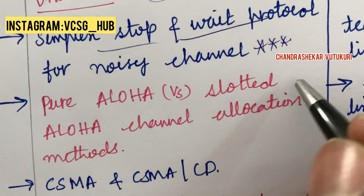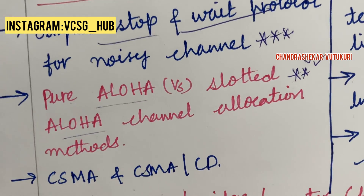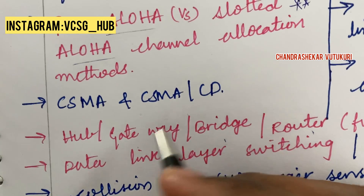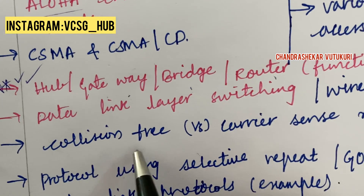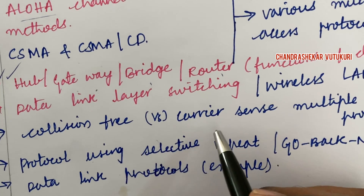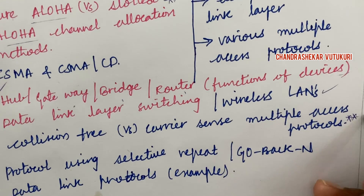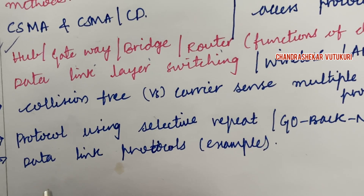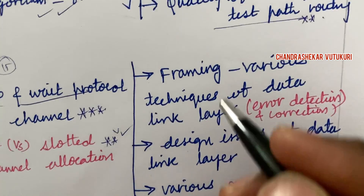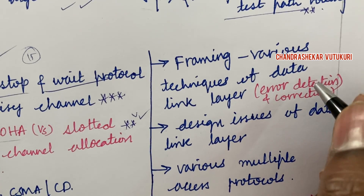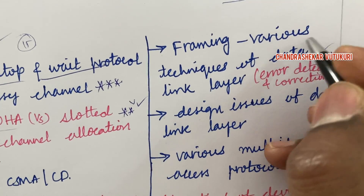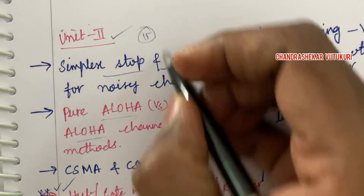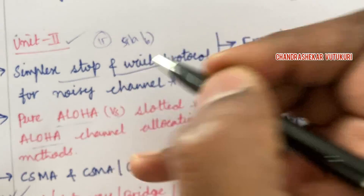Pure ALOHA versus Slotted ALOHA — related to this we are going to get one question for sure, in the form of differences or a short question. CSMA and CSMA/CD, hub, gateway, bridge, router, and the functions of all these devices is said to be a short or five-mark question. Data link layer switching and wireless LANs, and collision-free versus carrier-sense multiple access protocol differences — hope you are taking your exam neatly. Protocol using selective repeat and go-back-N is also said to be a five-mark question. Data link protocol along with examples may be a short question. Framing, various techniques of the data link layer, and error detection and correction may be a short or long question. Design issues of the data link layer may be a long question, and various multiple access protocols — this is said to be a 4A and 4B question.